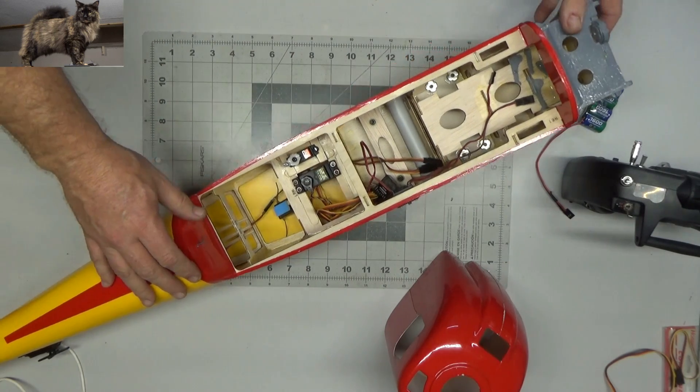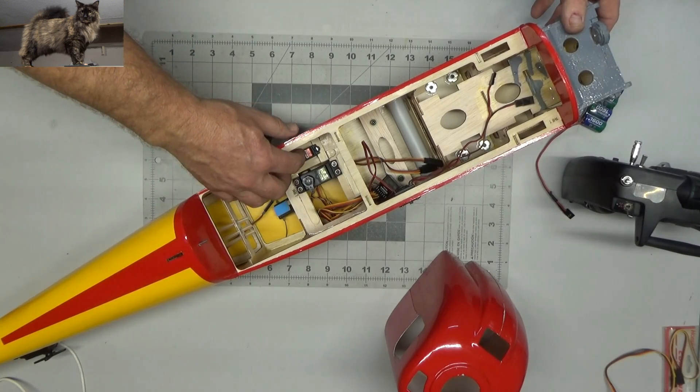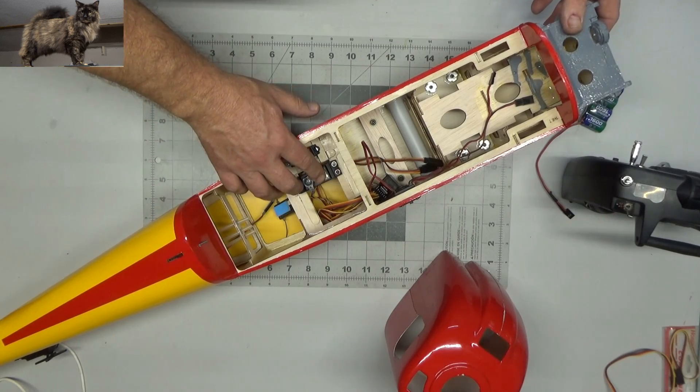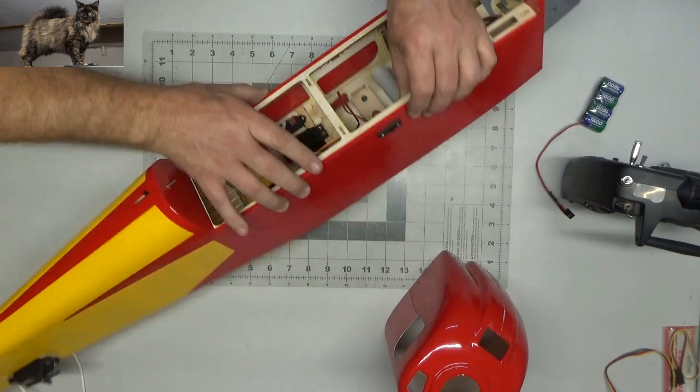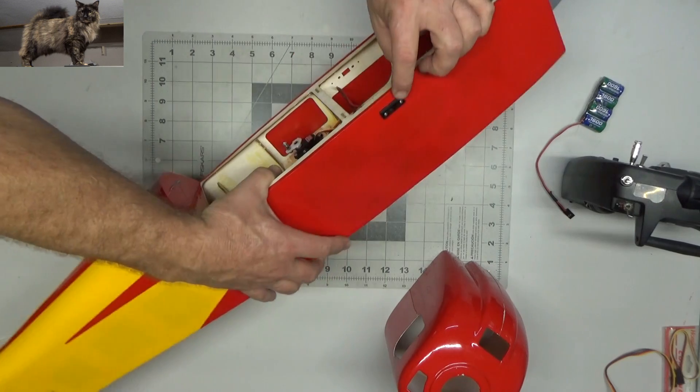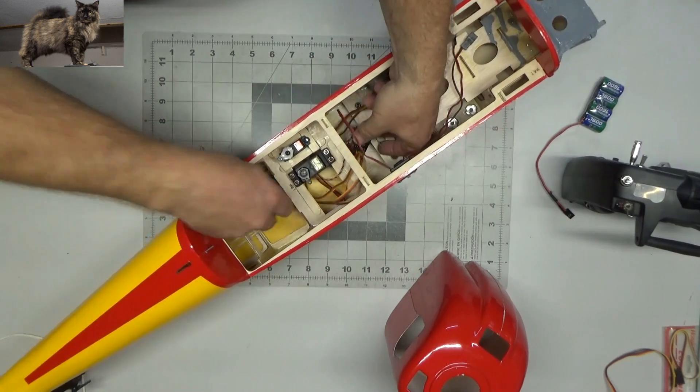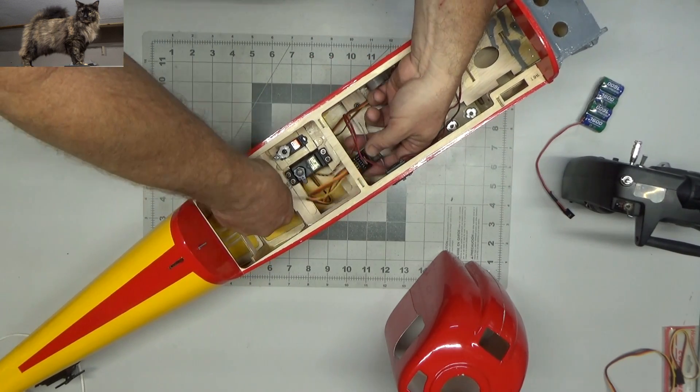As you can see, now I've got throttle servo and elevator servo installed. And I've got my receiver, my switch and receiver preliminarily connected up.